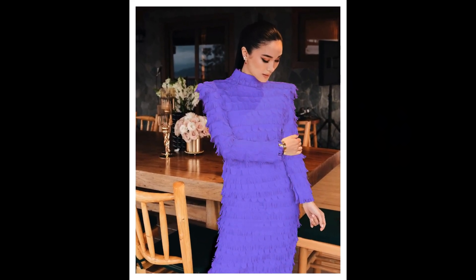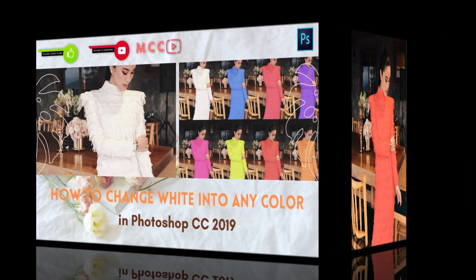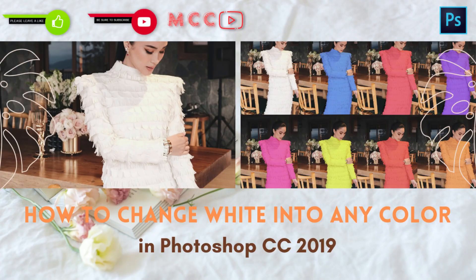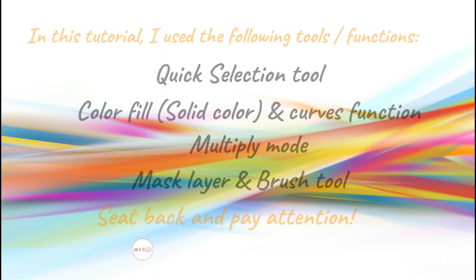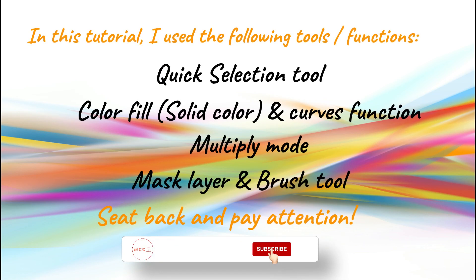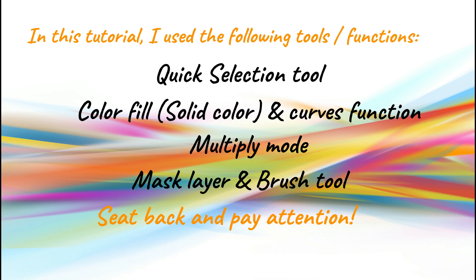Hello and good day everyone. I am here again to demonstrate the tutorial for changing a white dress to any colors using Photoshop CC 2019. In this tutorial you will familiarize the functions and learn how to use them. Here are the tools and functions I used: quick selection tool, color fill, solid color, and curves.